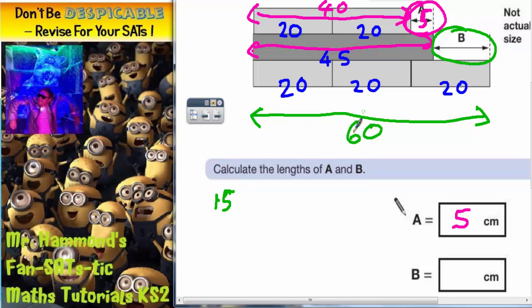Another way of doing it could be start with 60 and take off your 45. 0 take 5 you can't do, carry the 1. 10 take 5 is 5, 5 take 4 is 1, so yes it is 15.